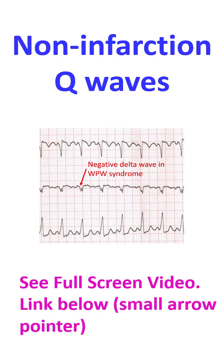Among conduction abnormalities which can cause Q waves are left bundle branch block and Wolff-Parkinson-White syndrome. In WPW syndrome, the initial negative delta wave manifests as a Q wave.